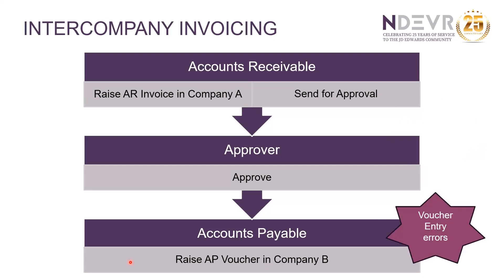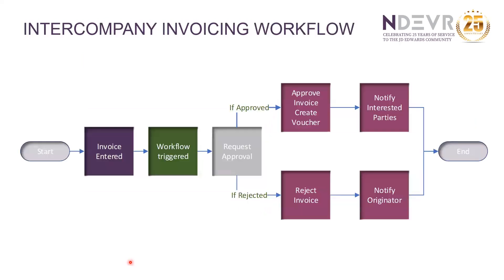There are many issues that can arise from even this simple process. For example, the paperwork may get displaced, meaning the invoice is not approved and the voucher is not created, causing the intercompanies not to reconcile. Or the voucher could be entered into the wrong company or for the wrong amount, again causing reconciliation issues. Let's look at building a workflow to alleviate these problems.